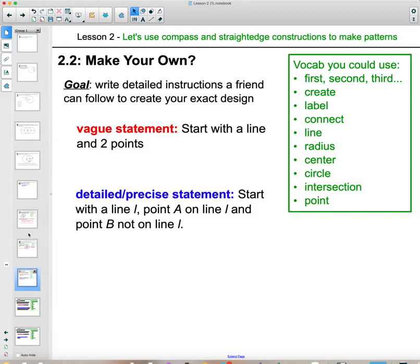In this lesson, we were supposed to make our own pattern and give detailed, precise statements to identify what we were doing. Just kind of trying to get you into the mindset of what is vague and what is precise. This statement right here says, start with a line and two points. Pretty vague.